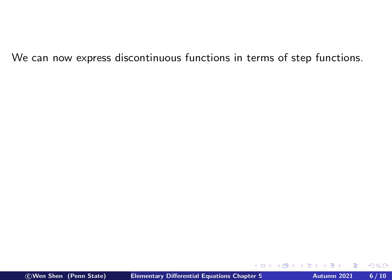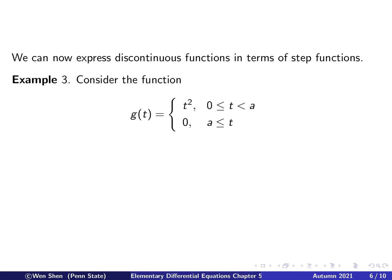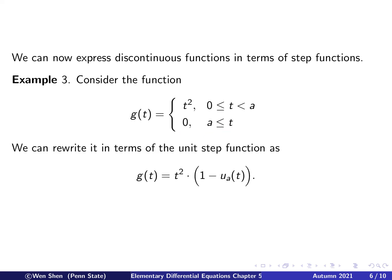Now we will learn how to express discontinuous functions in terms of step functions. Consider the function g(t) equals t-squared for t between 0 and a, and 0 for t greater than a. Since g is non-zero only on that interval, we can write it as t-squared multiplied by the combination of step functions that picks up that interval, which is 1 minus u_a(t). So a piecewise-defined function can be expressed in a single expression using step functions.